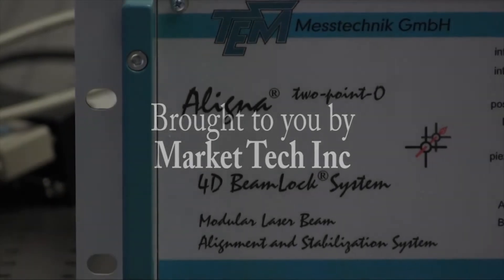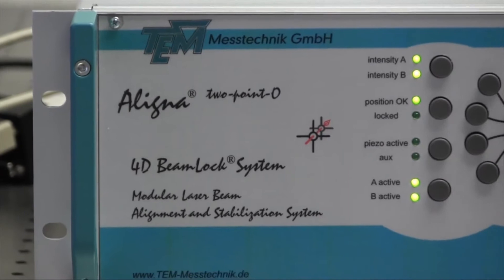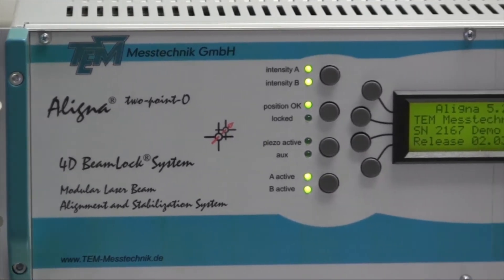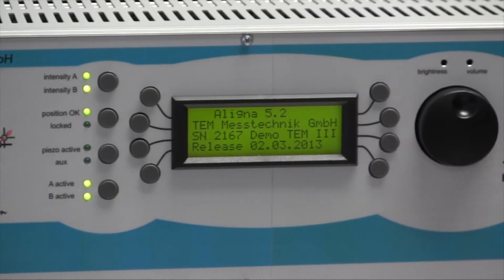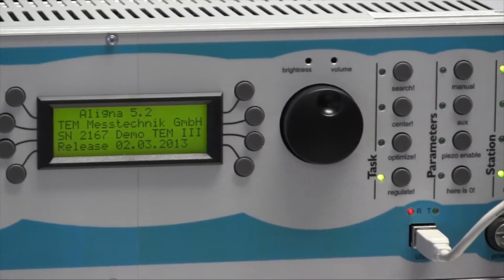Today we'll be introducing the Alina by TEM of Hanover, Germany. The Alina is a laser alignment and stabilization system. It is fully automated and accurate to within several nanometers.